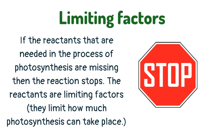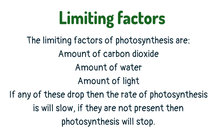If the reactants that are needed in the process of photosynthesis are missing, then the reaction stops. The reactants are limiting factors — this means that they limit how much photosynthesis can take place. The limiting factors of photosynthesis are: amount of carbon dioxide, amount of water, and amount of light. If any of these drop then the rate of photosynthesis will slow; if they are not present then photosynthesis will stop.